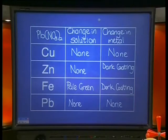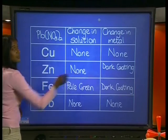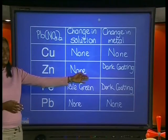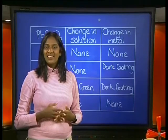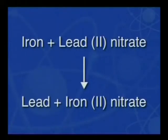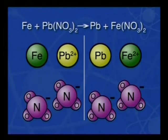We know that in a displacement reaction, a more reactive solid metal pushes out the metal in solution to form a new metal salt solution. The displaced metal is deposited as a solid metal. So this dark substance we saw must be solid lead, displaced during the reaction. Let's look at the equation for the reaction of iron and lead 2 nitrate. The word equation is: iron plus lead 2 nitrate react to form lead and iron 2 nitrate. The chemical equation is: Fe + Pb(NO₃)₂ → Pb + Fe(NO₃)₂. If we count the atoms of each element on both sides of the equation, we see that this reaction is balanced.